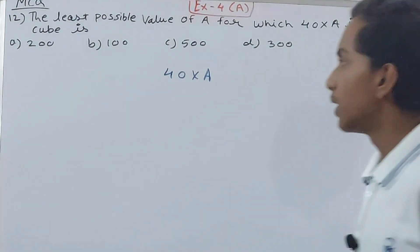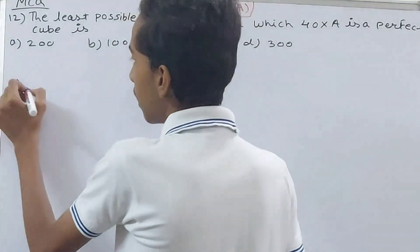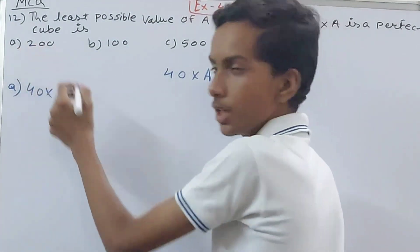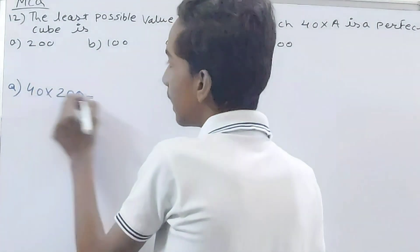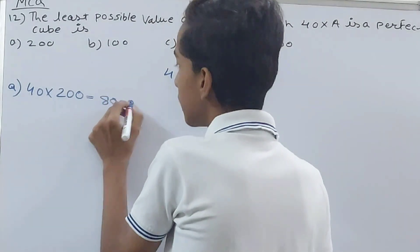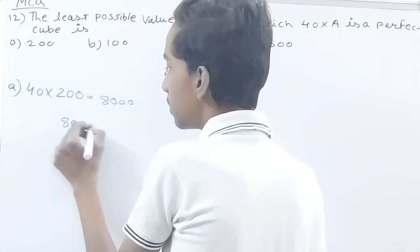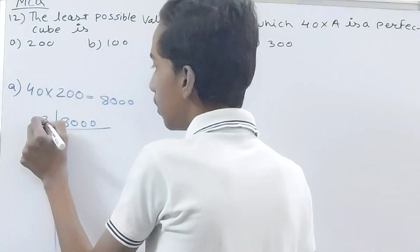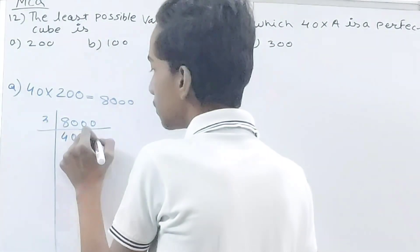But we will check one by one to see. A is 40 into A, value of A in option A is 200. So 40 into 200, that is 8000. Let's check if this is a perfect cube or not.